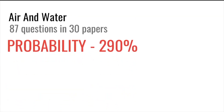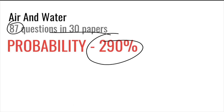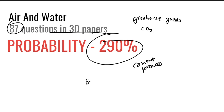Air and water has 87 questions in 30 papers — nearly three questions per paper with a ~290% probability. Topics include greenhouse gases (CO2, carbon monoxide), atmospheric composition (nitrogen 78%, oxygen 21%), the contact process and its catalyst, sulfur, nitrogen, acid rain, pH, catalytic converters, and combustion reactions including incomplete combustion.